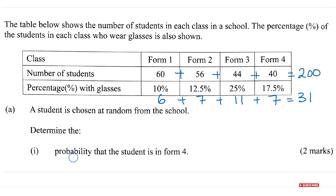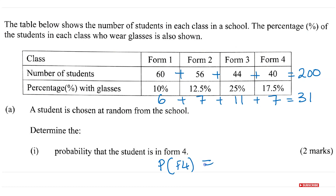For part AI, we are asked: what is the probability that the student is in Form 4? This is worth two to three marks. We know there are 40 students in Form 4 out of 200. So the probability a student is in Form 4 is simply 40 over 200, which simplifies to 1/5. That is the answer for this part.